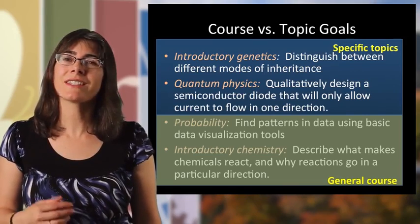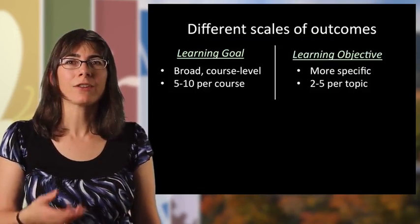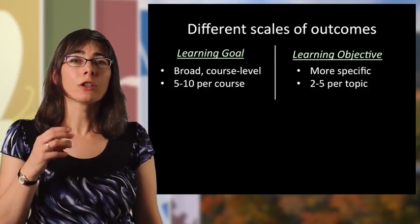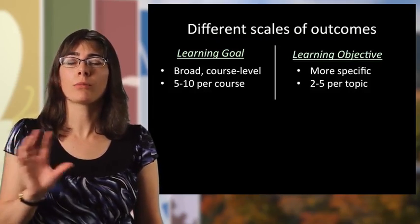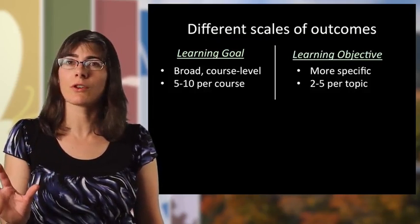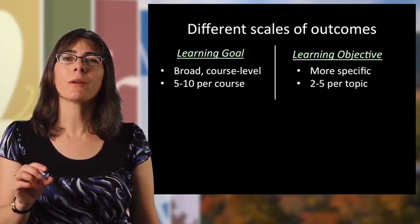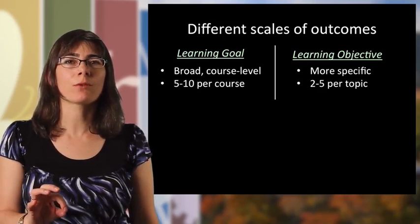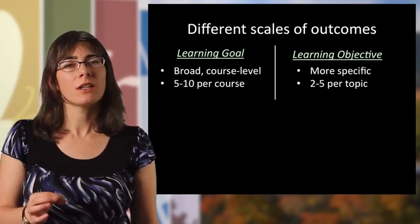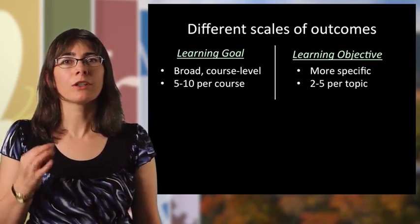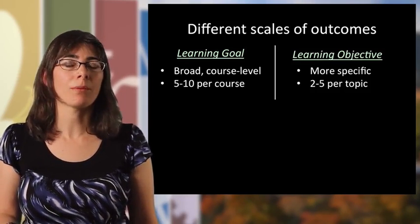There are different scales of learning outcomes. You might have what we call learning goals, which are the broad course-level goals — you might have five to ten per course. And then learning objectives are the more specific topic-level learning outcomes, and there are usually two to five of those per topic.